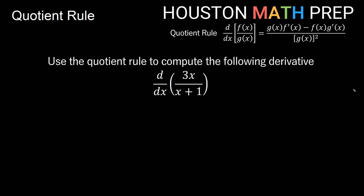Let's look at doing a few examples with the quotient rule. We're going to use the quotient rule to find the derivative of 3x over x plus 1 with respect to x. This part down here is our g, this is our low function, and this 3x up here is our high function, that's our f. So we have g f prime minus f g prime on the top. I'm going to go ahead and use the rhyme here — low d high, so that's the low function times the derivative of the high function. The derivative of 3x is 3.